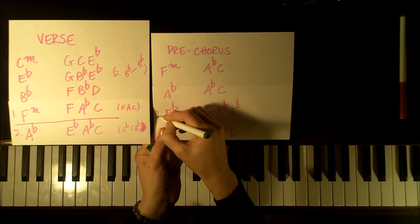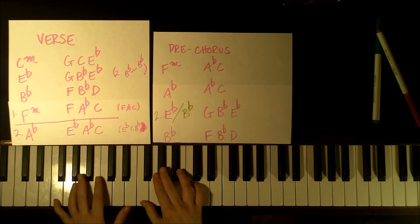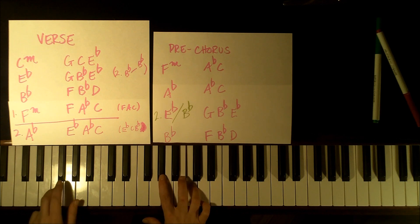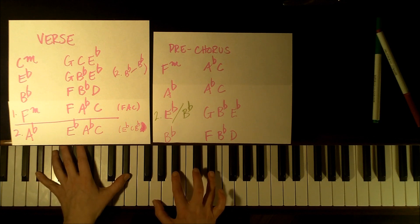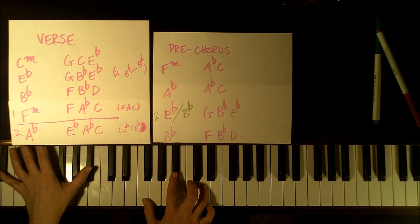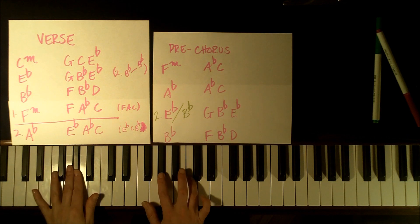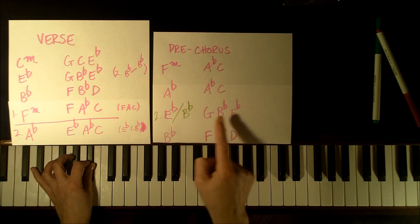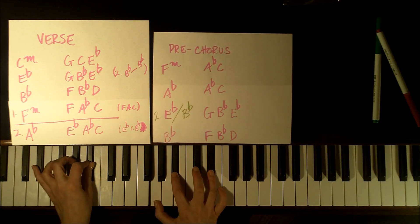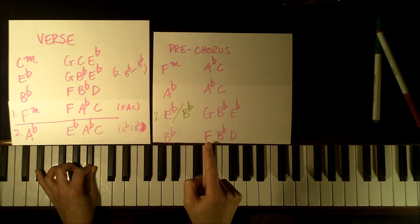And this time, so the second time we play this, we're going to play this Eb actually over Bb. So coming through, we've got F minor with Ab and C. Then Ab with Ab and C. First time, the full chord played over Eb with G, Bb, Eb. Then Bb, D. Repeat. F with Ab and C, and Ab with Ab and C. Now we're going to play this Eb chord, the G, Bb, Eb, but the left hand is going to play the Bb.